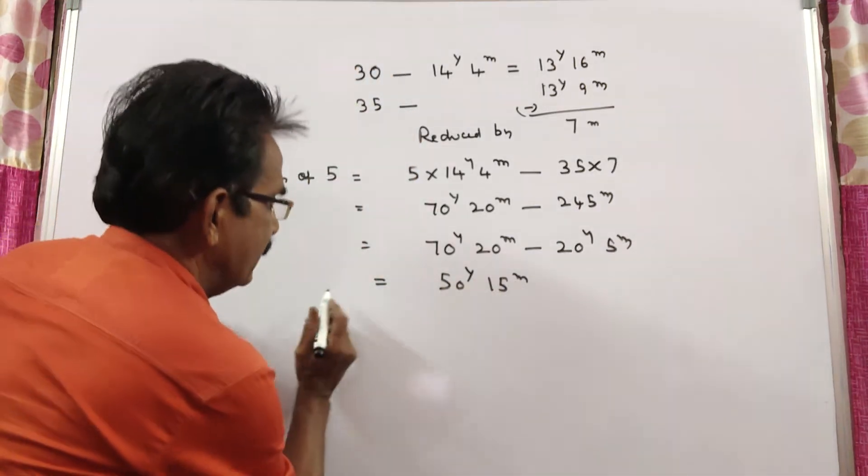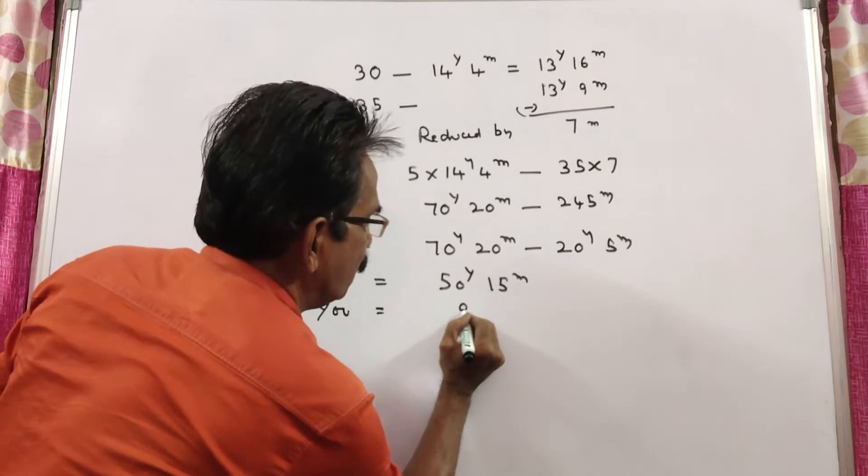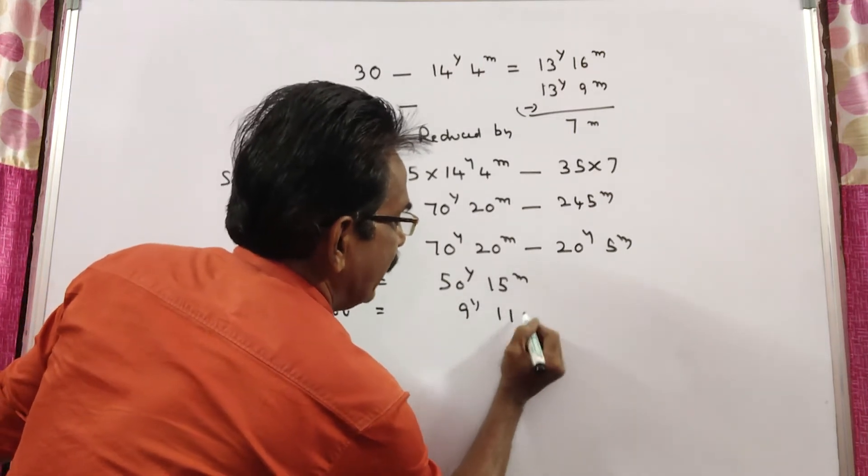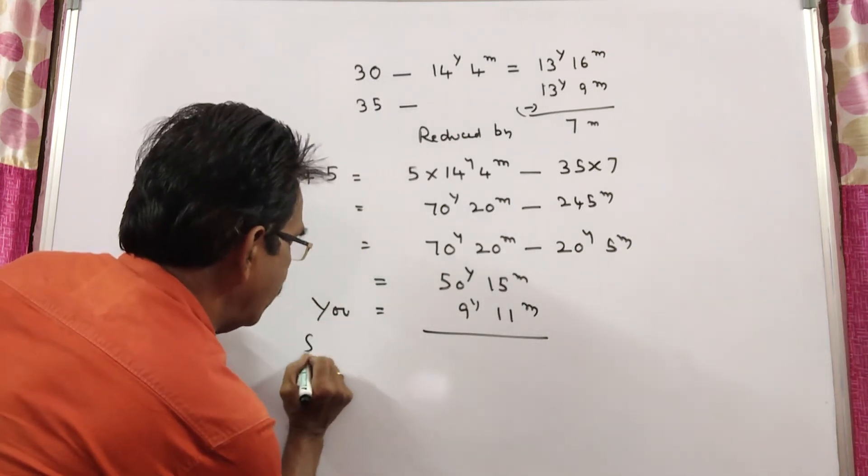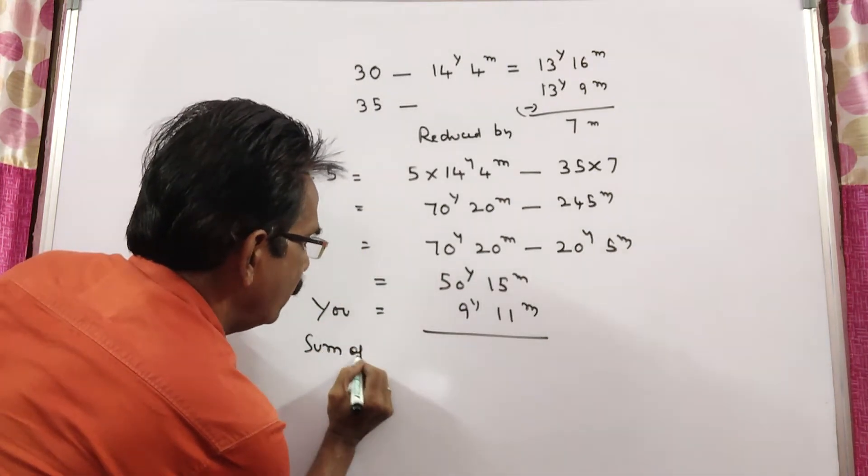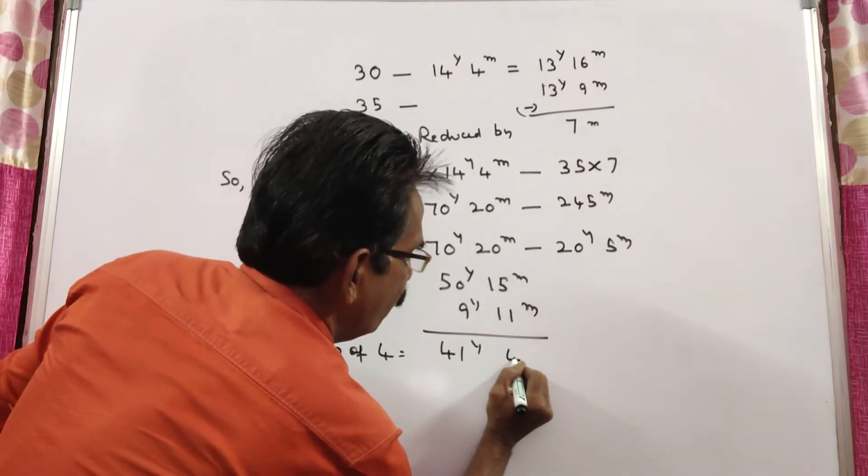In this, the age of the youngest is equal to 9 years, 11 months. So, sum of the remaining 4 is equal to 41 years, 4 months.